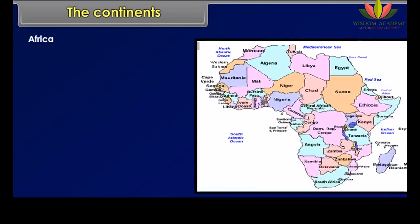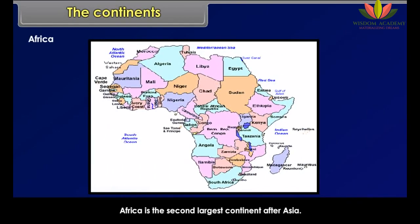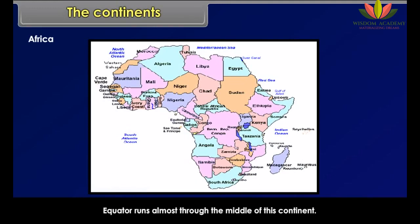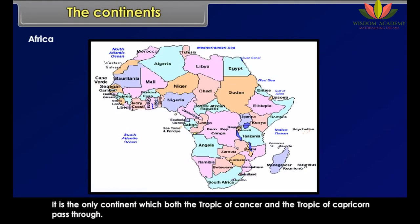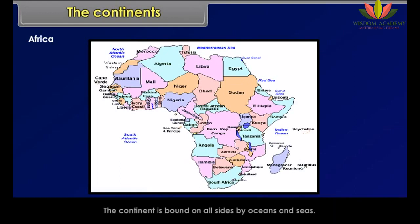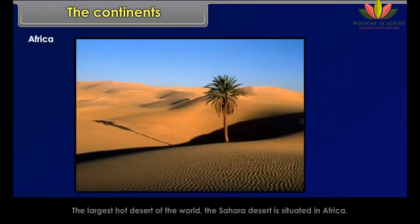Africa is the second largest continent after Asia. The equator runs almost through the middle of this continent, and the wider part of Africa lies in the northern hemisphere. It is the only continent through which both the Tropic of Cancer and the Tropic of Capricorn pass. The continent is bound on all sides by oceans and seas. The largest hot desert of the world, the Sahara Desert, is situated in Africa.